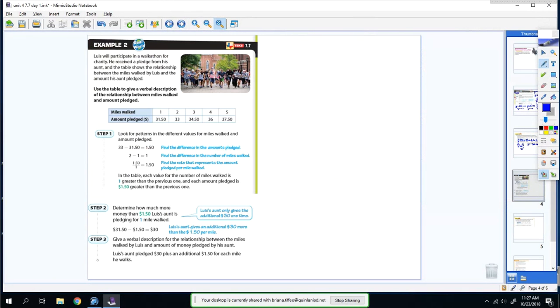Lewis will participate in a walk-a-thon for charity. He received a pledge from his aunt, and the table shows the relationship between the miles walked by Lewis and the amount that his aunt pledged. I'm actually going to write this table over here. So x is the miles and y is the amount pledged.